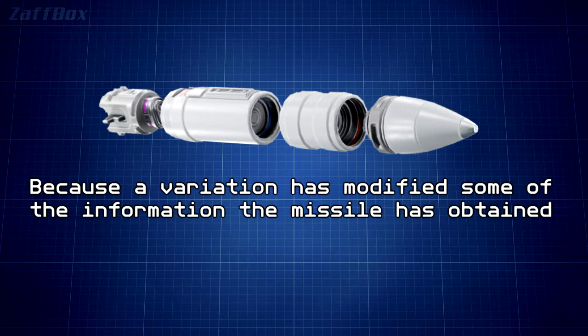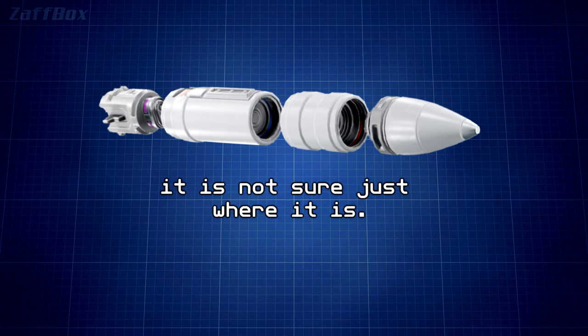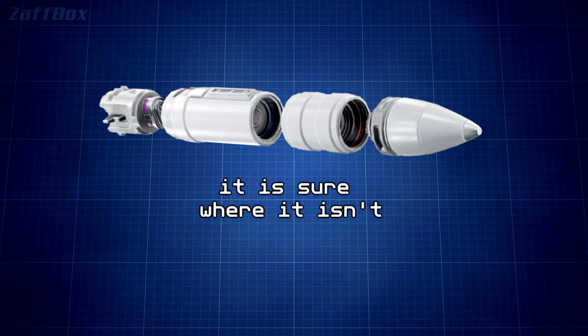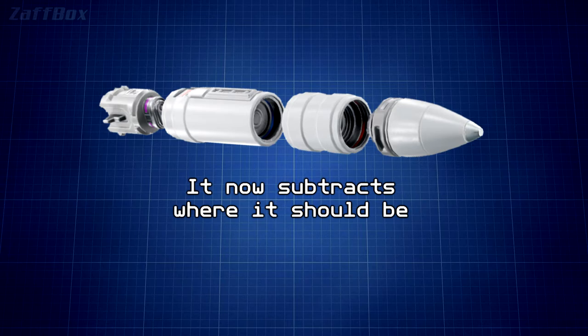The missile guidance computer scenario works as follows: because a variation has modified some of the information the missile has obtained, it is not sure just where it is. However, it is sure where it isn't, within reason, and it